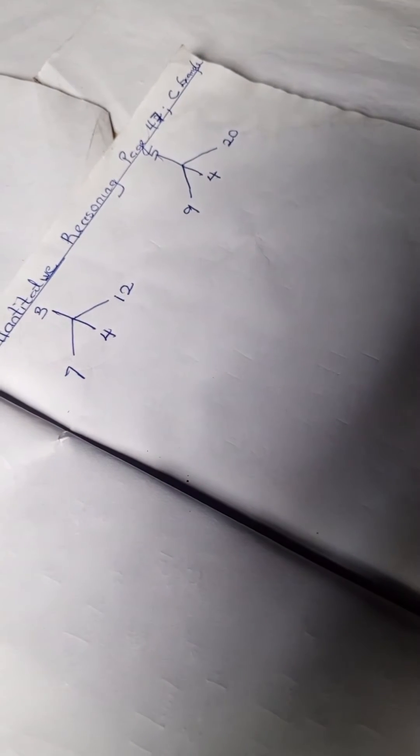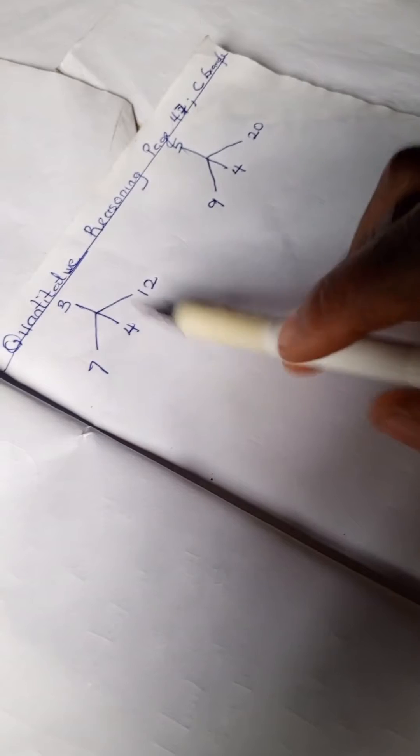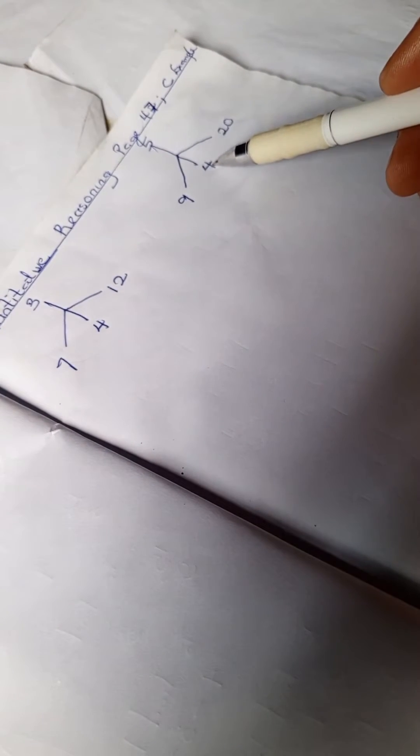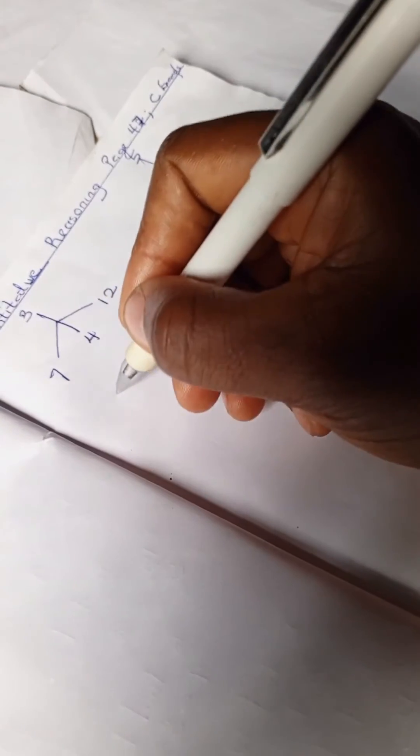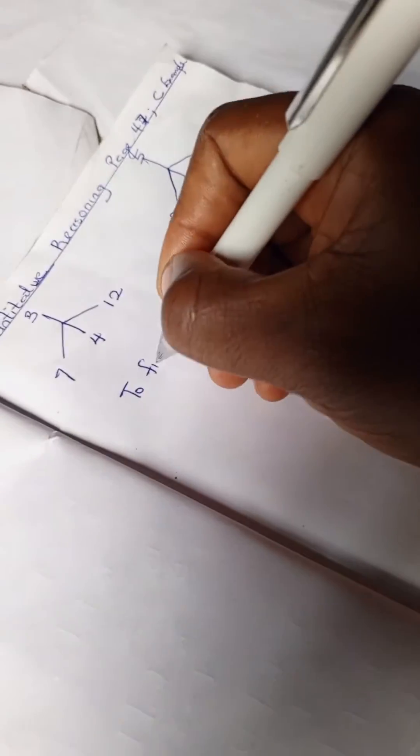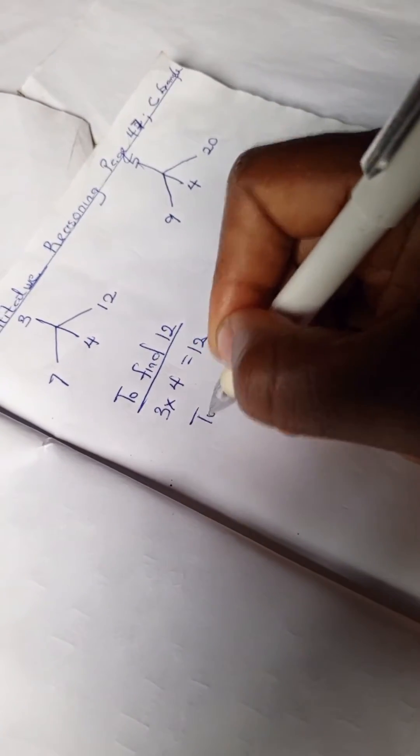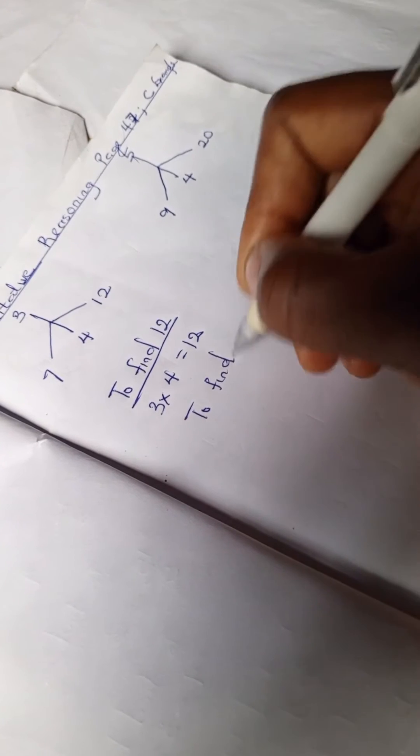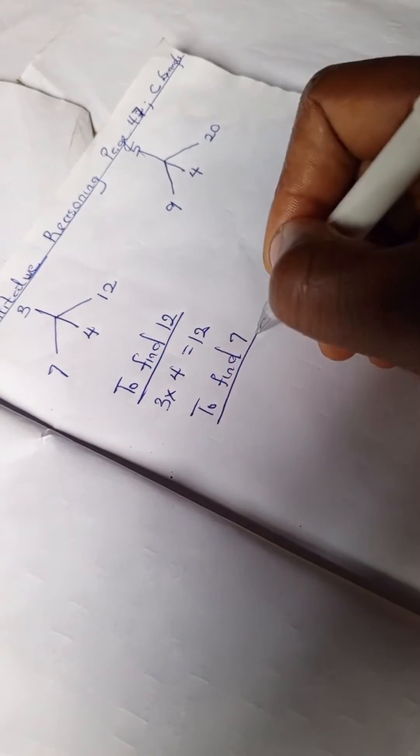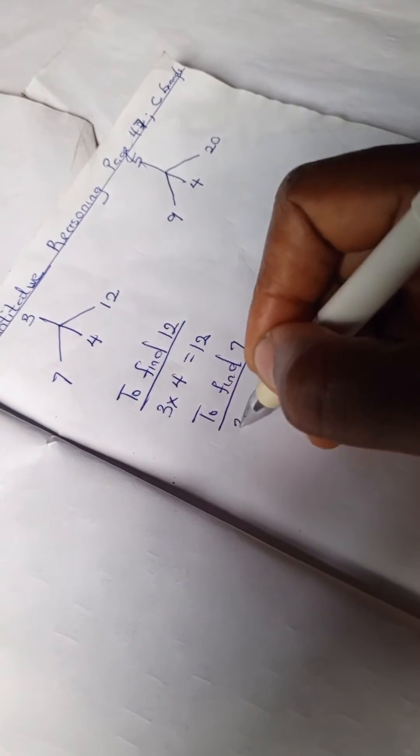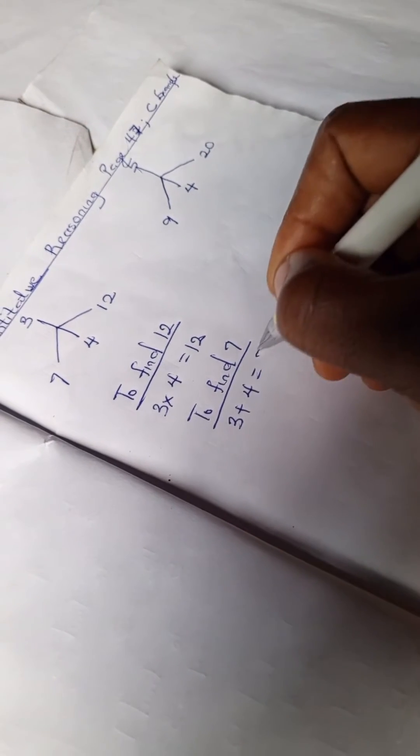Let's walk through: 3 times 4 is 12, 5 times 4 is 20, 3 plus 4 is 7, 5 plus 4 is 9. So we can use this. Let's find 12: 3 times 4 is 12, and to find 7 we have 3 plus 4 is 7.